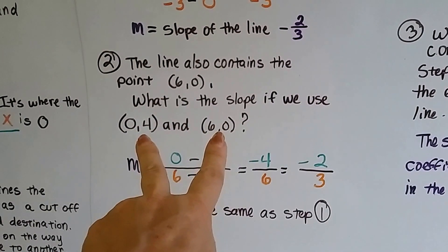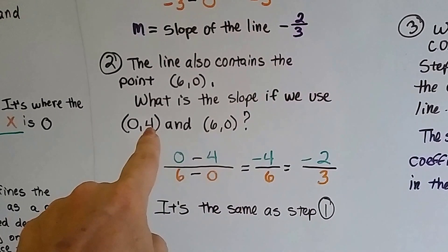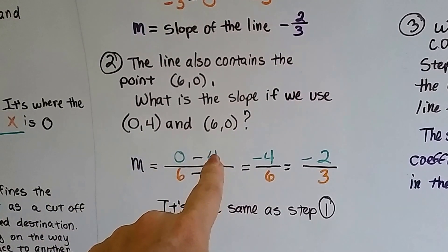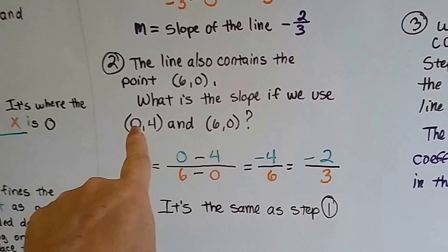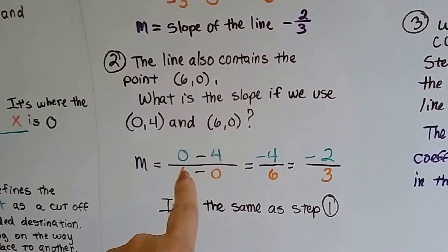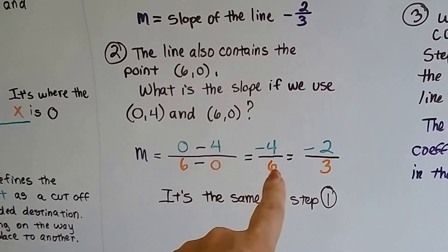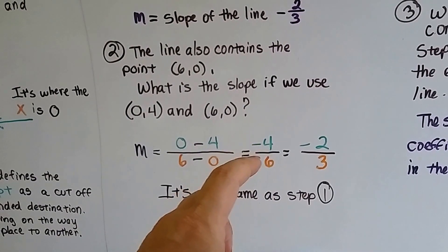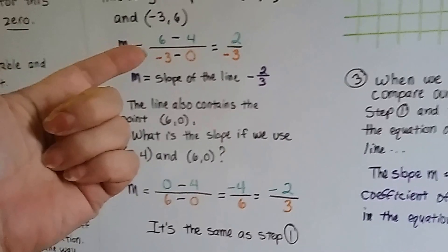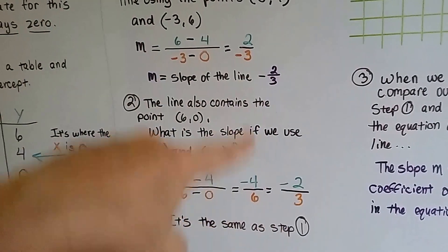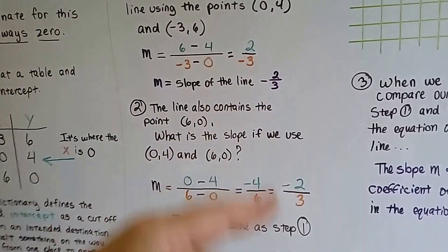We take the second y, 0, and we subtract the first y, 4. 0 minus 4. And we take the second x, 6, and we subtract the first x, 0. So we have 0 minus 4 is a negative 4. And 6 take away none is 6. So now we've got negative 4, 6. When we reduce it, it's negative 2 thirds. It's the same as step 1. It's negative 2 thirds. So it didn't matter which two points we used. We got the same slope.